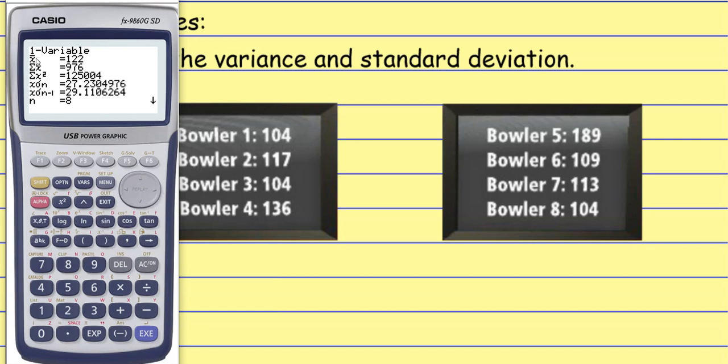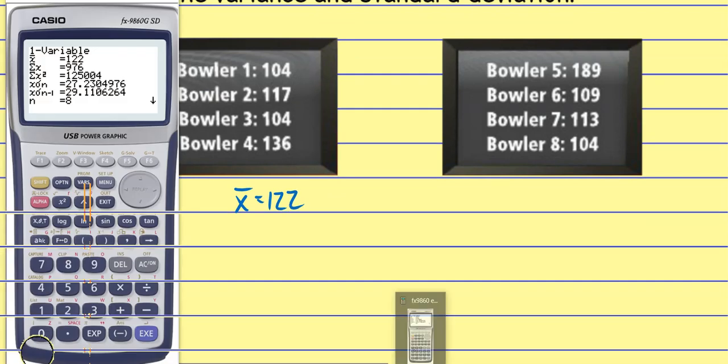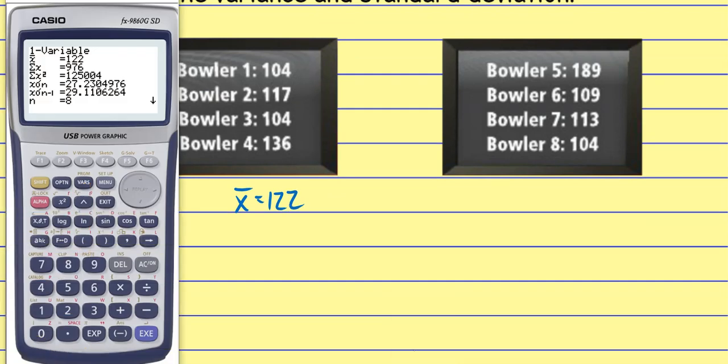And so now when I look at this thing, it gives me more than just the variance and standard deviation. It gives me a whole lot of information here. The very first thing that's listed right here, X with the bar over, that's our mean. So the mean is 122. So I could copy that guy down. And now I kind of go through this list. This next one, that's an uppercase sigma. So uppercase sigma there, that is the symbol for the sum. So that's the sum of all the data values, 976. The next one is the sum of all the data values squared.